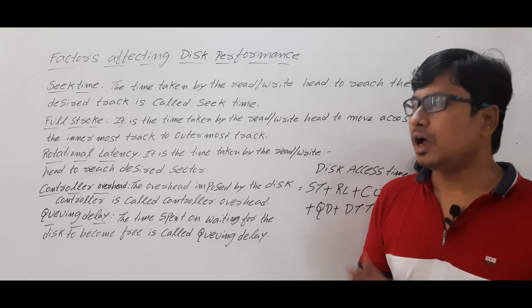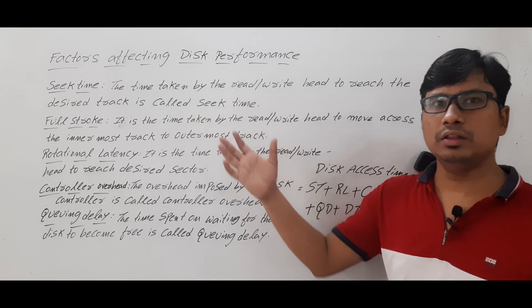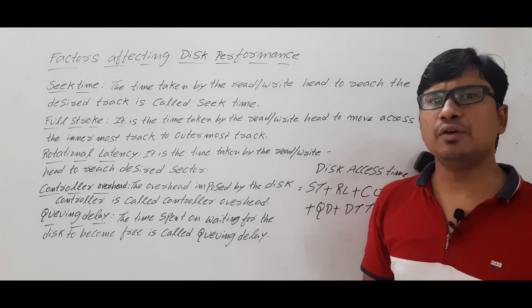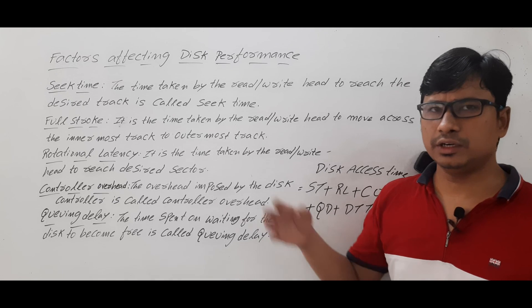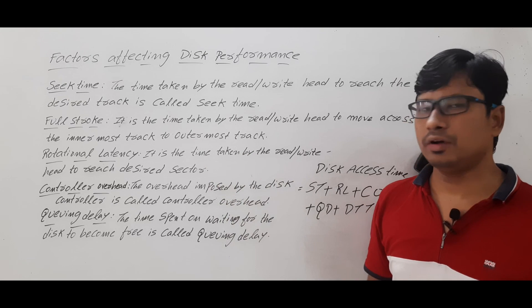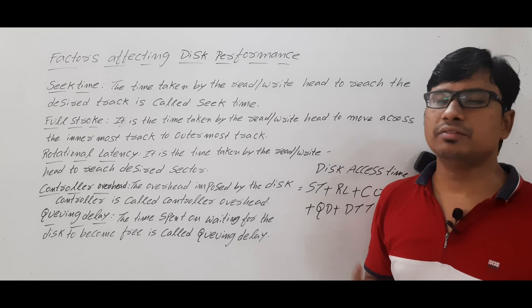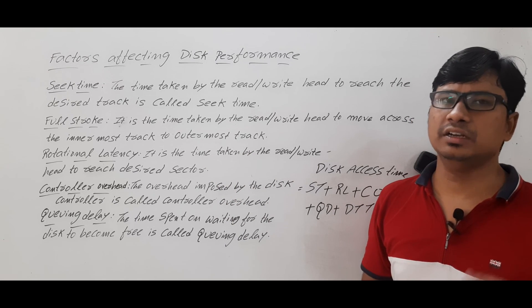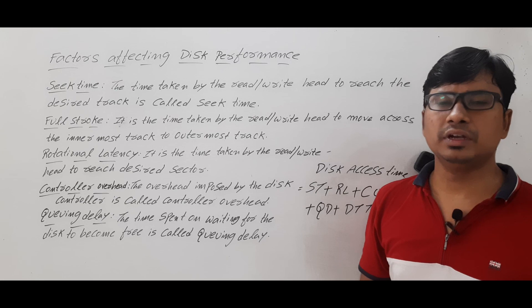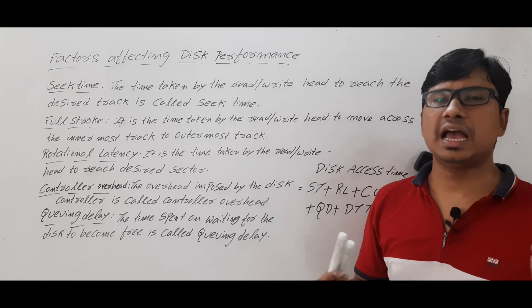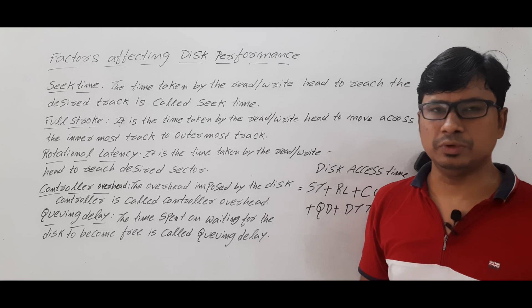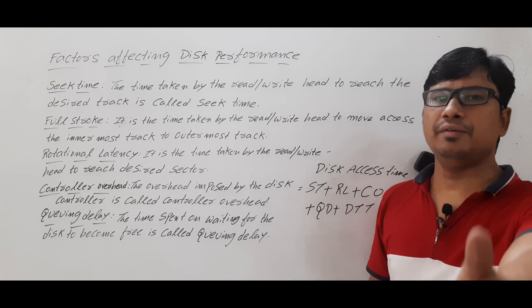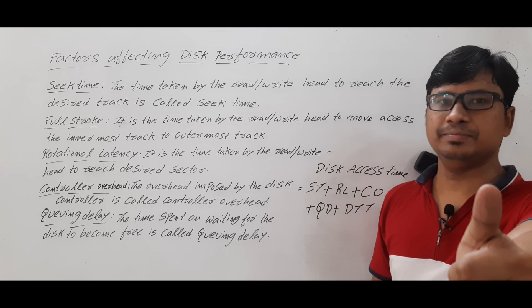The disk access time equals the summation of seek time, rotational latency, controller overhead, queuing delay, and data transfer time. I hope you have understood all the parameters. If you still have any doubts related to any parameter, feel free to ask in the comments and I will try to clear your doubts as early as possible. Thank you for watching the complete video — have a nice day.